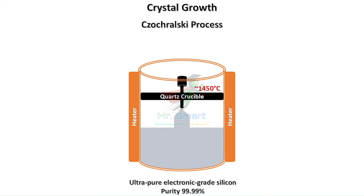The seed is slowly pulled upward while the rod rotates. This controlled movement ensures the silicon atoms arrange themselves in the same orientation as the seed crystal. The speed of pulling and the temperature are carefully adjusted to control the diameter of the crystal. After hours of growth, a large cylindrical ingot of silicon is formed. This precise process ensures that the silicon ingot is a single crystal with no grain boundaries, which is essential for high-performance semiconductor applications.